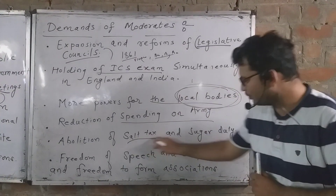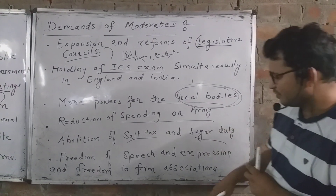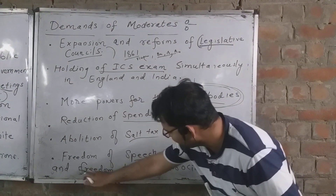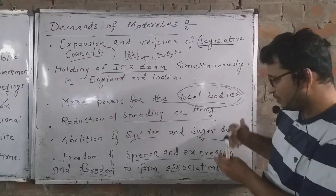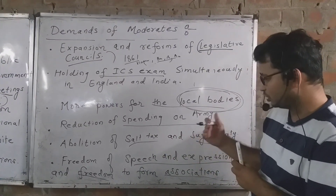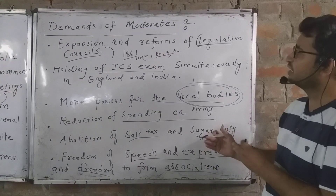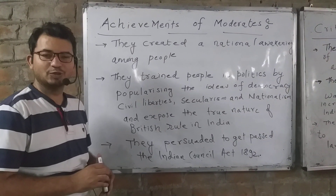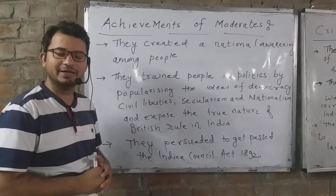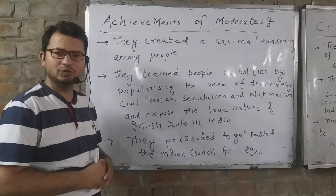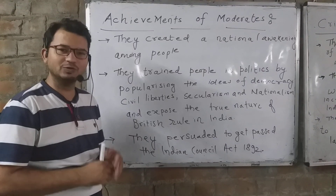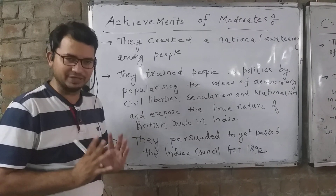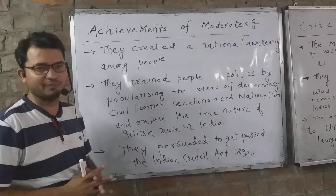Other demands included abolition of certain taxes like sugar duty, freedom of speech and expression, freedom of association, and other civil liberties. So these were the demands of moderates that they placed before the British government, and they achieved some results.